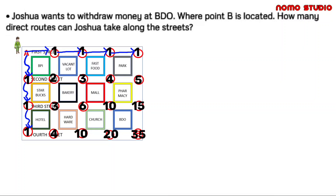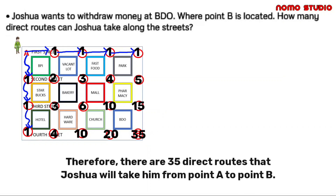So we already arrived at point B with thirty-five routes. Therefore, there are thirty-five routes that Joshua can take from point A to point B.